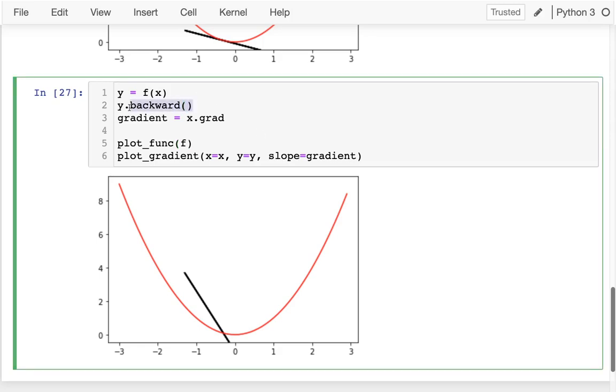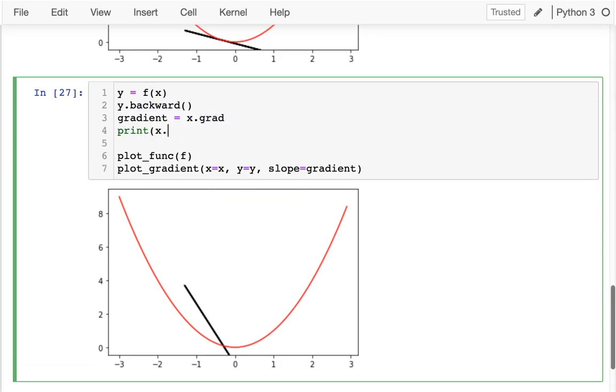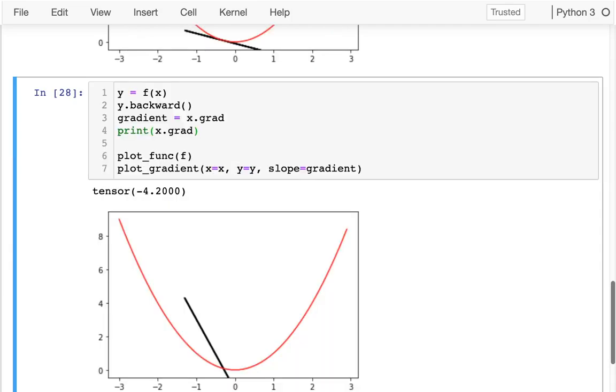Well, because when I call this backward thing, the way PyTorch behaves is that instead of directly setting this gradient to what it should be, it adds the gradient to this variable. So this value keeps getting bigger and bigger, or smaller and smaller in this case. So I keep running that, and you can see that gradient keeps changing each time. Because it's not directly setting it, it's just adding to it. And there are techniques beyond the scope of this course where that's actually a useful thing to do, where you want to be adding gradients instead of directly computing them. Definitely not useful for us though.